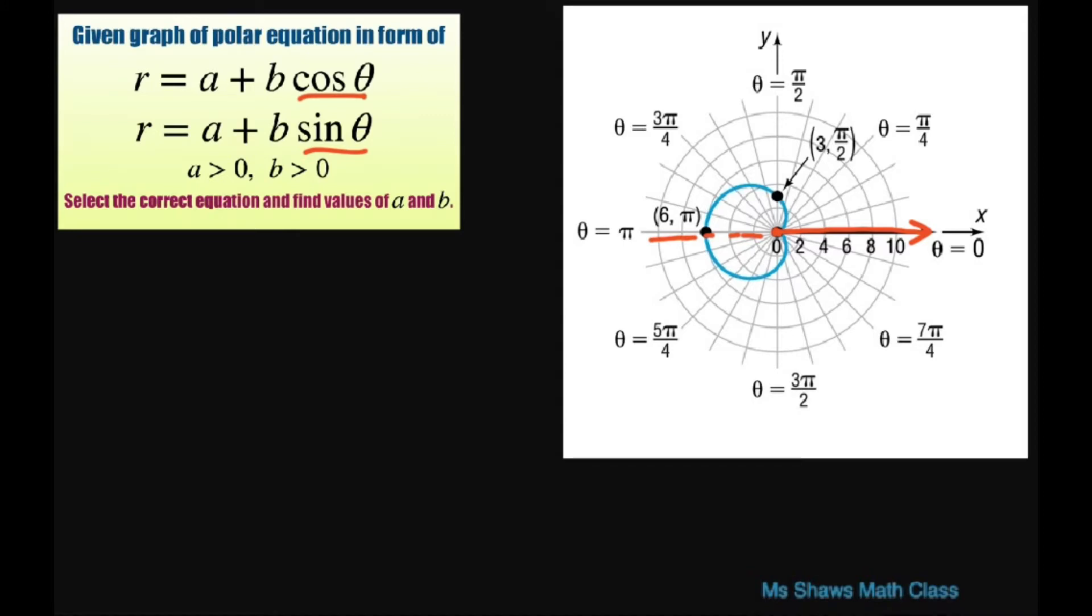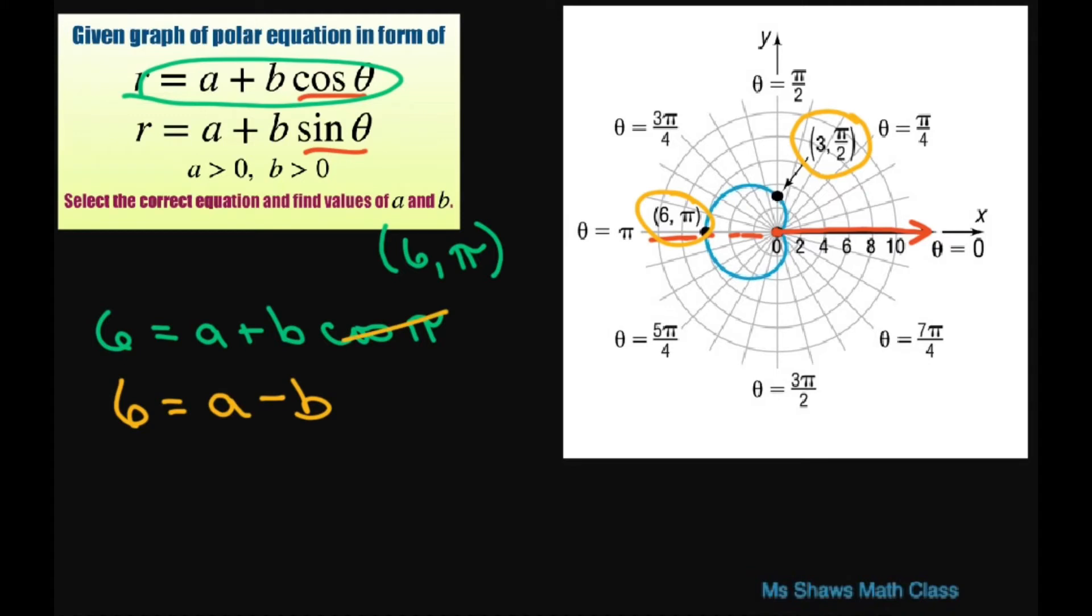Now, with this graph, we're given two points, and we're going to use these two points given here and write this out using this first equation. Let's do 6, pi first. Now that's going to be 6 equals A plus B times cosine of pi. Now, cosine of pi is negative 1. So we get 6 equals A minus B because it's negative 1.